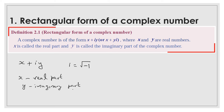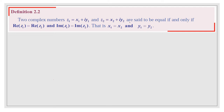Next definition: two complex numbers z1 and z2 are said to be equal if and only if the real parts of both are the same and the imaginary parts of both the complex numbers are the same. That is x1 is equal to x2 and y1 equal to y2. So we have two complex numbers: z1 equal to x1 plus iy1 and z2 equal to x2 plus iy2, where x1, y1, x2, y2 are all real numbers. x1 and x2 are the real parts; y1 and y2 are the imaginary parts of z1 and z2 respectively.